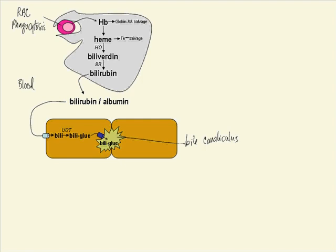Conjugated bilirubin is transported into the bile canalicular system, eventually making its way into the gallbladder. Under normal circumstances, a small amount of water-soluble conjugated bilirubin is released into the plasma.